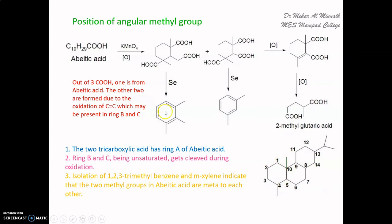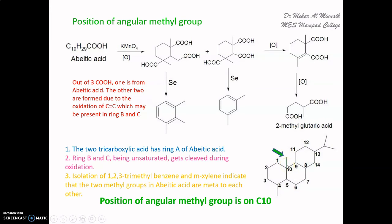For the two methyl groups on ring A to be meta to each other, the angular methyl group must be on carbon 10. This makes it meta to the methyl group already established on carbon 4 (part of the retene skeleton). A methyl at carbon 2 would not yield the observed tricarboxylic acid pattern. Therefore, the angular methyl group is confirmed at carbon 10.